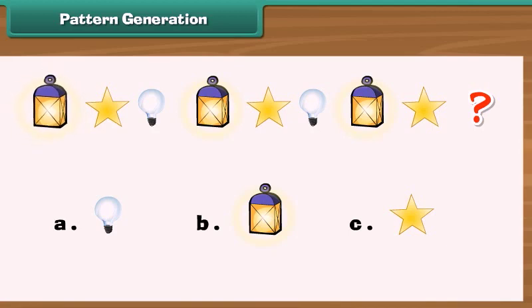First, the lantern, then the star, and then the bulb. The given pattern ends with a star. So the next object must be the bulb. So, A is the correct option.